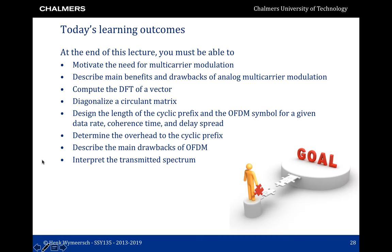We wrap up the lecture with a brief recap of the learning outcomes. You should be able to motivate multicarrier transmission, contrast analog and digital multicarrier transmission, compute DFTs of vectors, diagonalize circulant matrices, design OFDM systems to meet certain requirements, determine cyclic prefix overheads, describe drawbacks and benefits of OFDM, and interpret the transmitted spectrum.